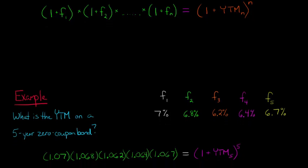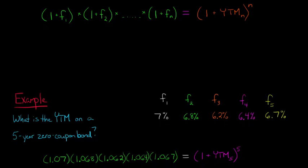So let's go ahead and start plugging in. So we see here we have 1 plus the forward rate from year 1. So that's 7%, so that's the same as 0.07. So we'd have 1 plus 0.07 is going to be that first term. And so what do we have? 1.07.